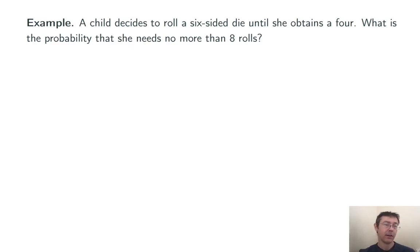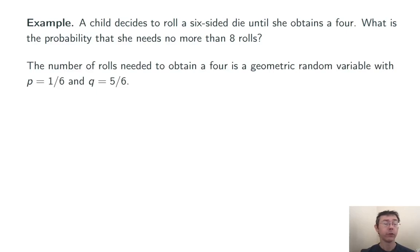Let's do an example. A child decides to roll a six-sided die until they obtain a 4. What's the probability that they need no more than 8 rolls? Let's, so first of all, let's notice that this is a geometric random variable. We're talking about the number of attempts needed until the first success, and all the attempts are identical. Here, the parameter P is 1/6. The probability of rolling a 4 is 1/6.